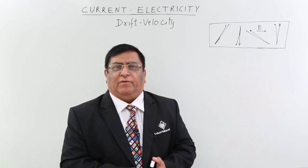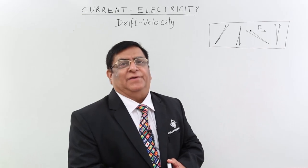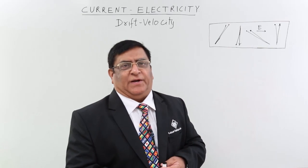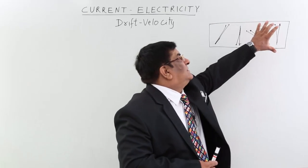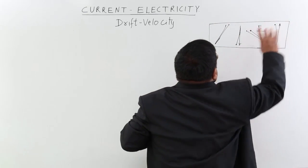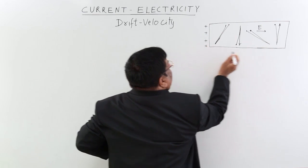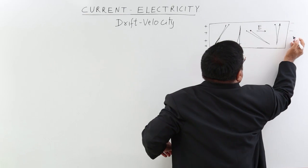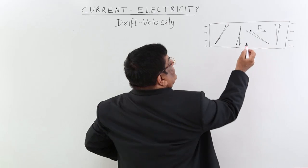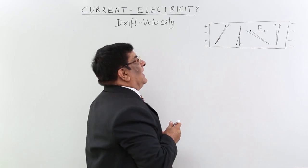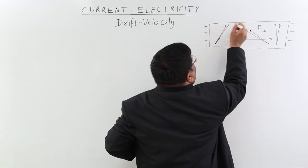We have studied about thermal velocity. Now there is another type of velocity which develops in charge particles when we apply an electric field across a conductor. This is representing a conductor. Here we apply electric field by some method, by connecting it to a battery or by any other method. From plus to minus there is an electric field in this direction.